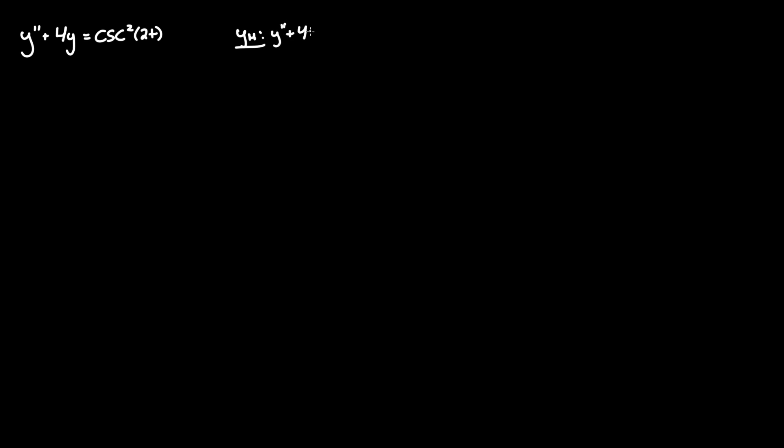the left-hand side and set that equal to 0, which allows us to make our auxiliary or characteristic equation in which the power of r is equal to how many derivatives are being taken on y. So y'' is r squared plus 4, and there's no r since there is no prime. We set that equal to 0.